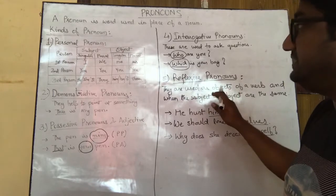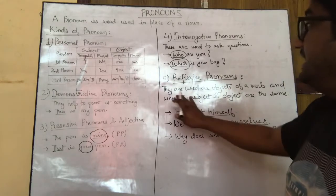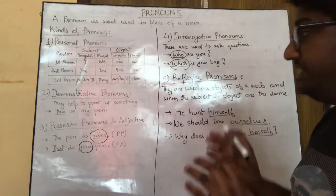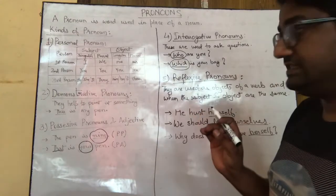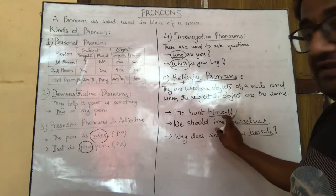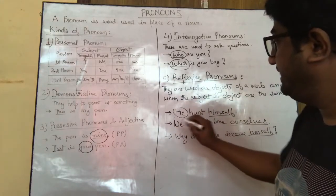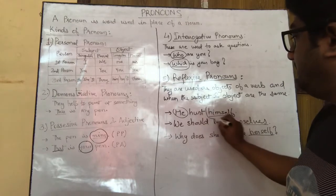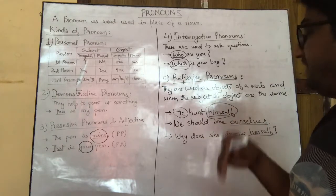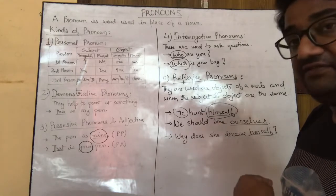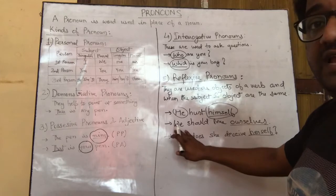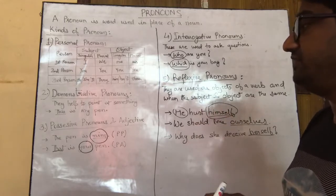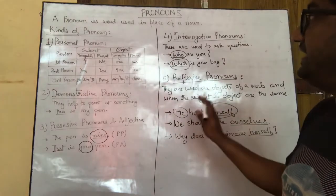The fifth and last type we will study today is the reflexive pronoun. Reflexive pronouns are used as objects of a verb only when the subject and the object in the sentence are the same. For example: 'He heard himself.' The subject is 'he', the object is 'himself', and both refer to the same person — that is why 'himself' is a reflexive pronoun. Examples include himself, ourselves, herself, myself. Further examples: 'We should love ourselves.' 'Why does she deceive herself?'